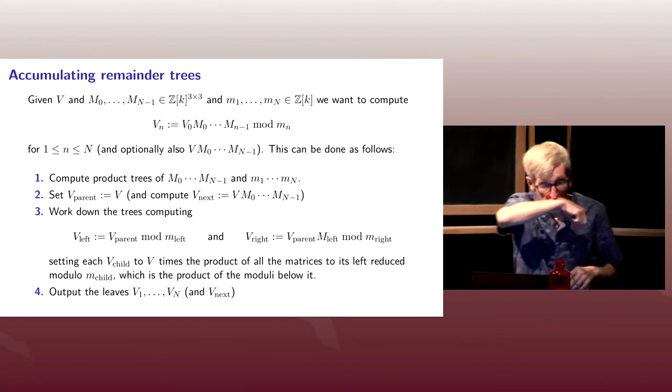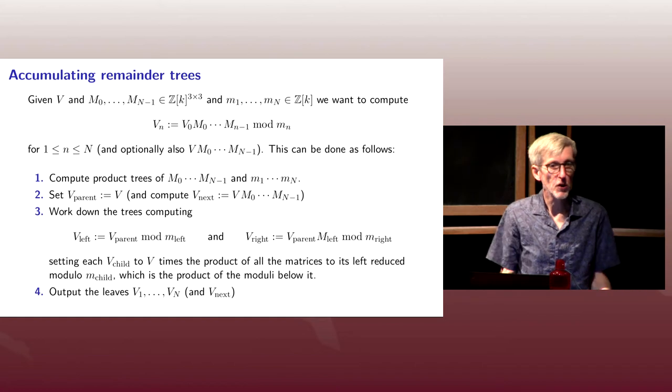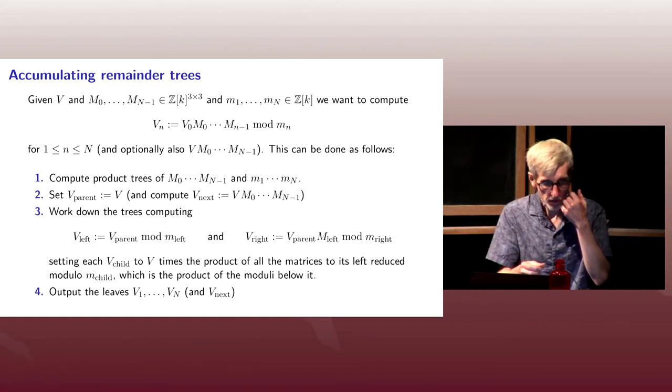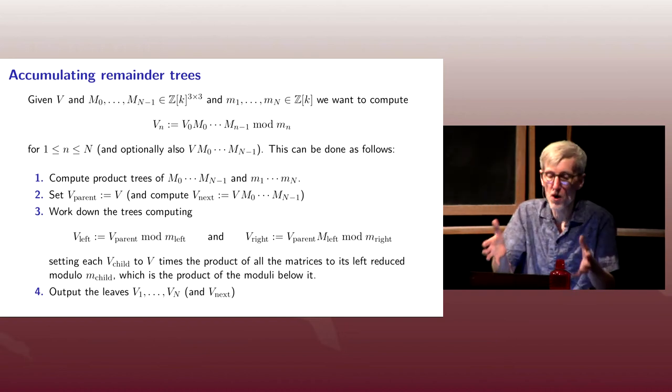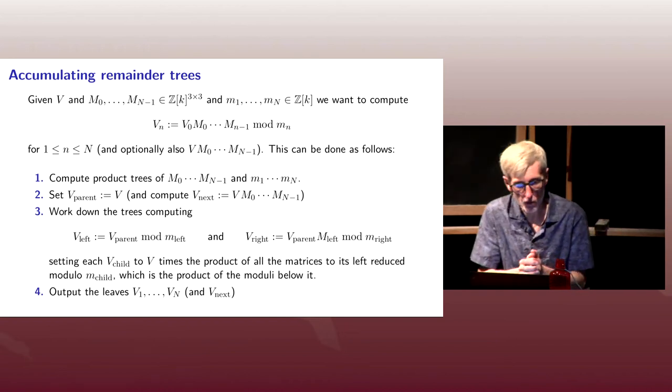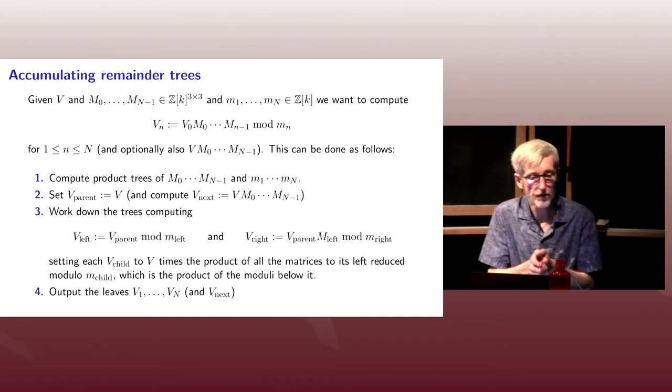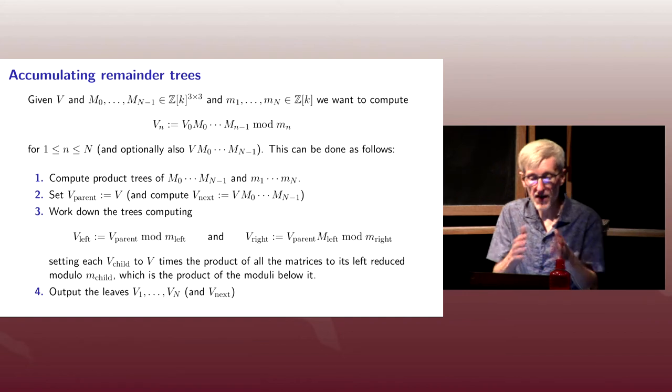So what we're going to do instead is use what's known as an accumulating remainder tree. This is due to David Harvey. I think he's at least the first person to write it down in this form and formally call it this.